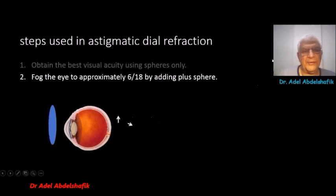So, by fogging the eye, we push everything forward so that one of the meridians will be on the retina. So, we want to reach to a vision of 6/18 by adding gradual increasing power plus spheres.